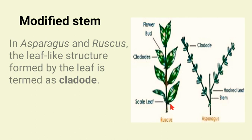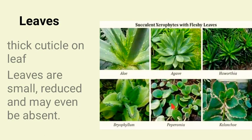There are many xerophytes which have fleshy leaves. Examples include Aloe vera, Agave, Haworthia, Bryophyllum, Peperomia, and Kalanchoe — these all have fleshy leaves. Leaves of xerophytes have a thick cuticle; the presence of a thick cuticle reduces transpiration. In some xerophytes, leaves are reduced; in some they are fleshy; and some xerophytes do not contain leaves at all.